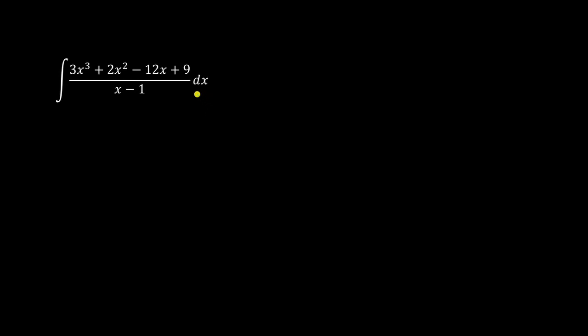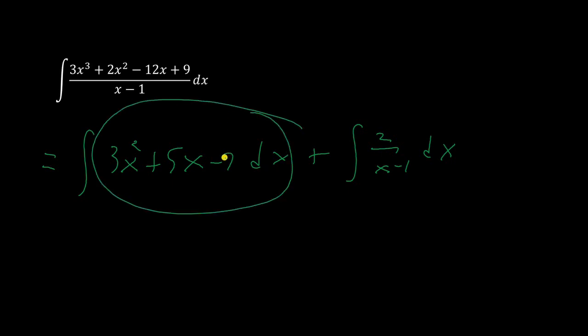For example, in this integral, using long division results in the integral of 3x squared plus 5x minus 7 plus the integral of 2 over x minus 1. So for this first part, you're going to use the opposite of the power rule, and then for this part, you'd use partial fractions.